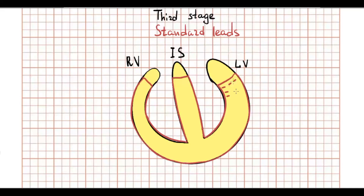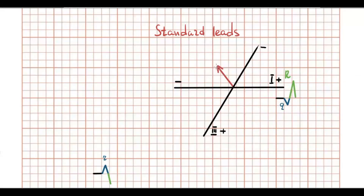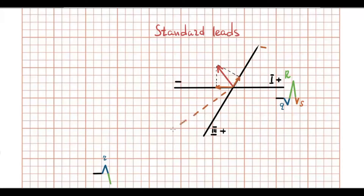The third stage is depolarization of the basal parts of the ventricles. This depolarization is directed upward and slightly to the right. The vector of depolarization is directed to the negative pole of the first standard lead, so in this lead a small S wave is present. On the other hand, the vector of ventricular depolarization is also directed to the negative pole of the third standard lead, so the S wave becomes deeper there.